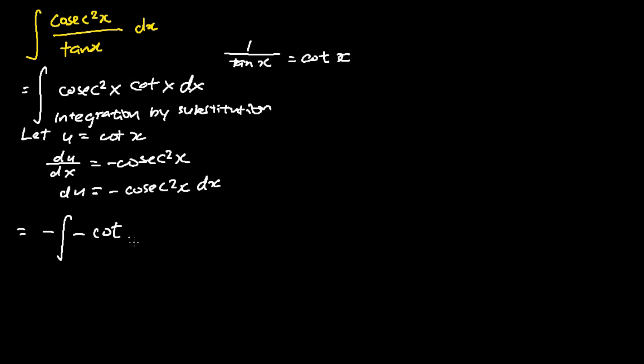So I have the negative of integral of negative cotangent x, cosecant square x dx. This can be rewritten as the negative of integral cotangent x times negative cosecant square x dx.